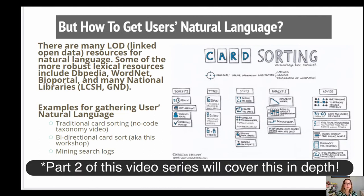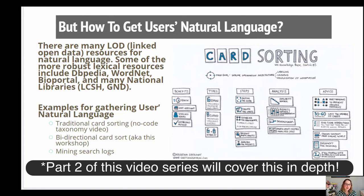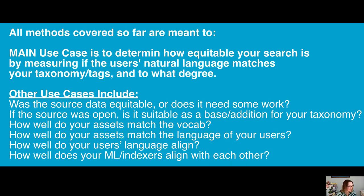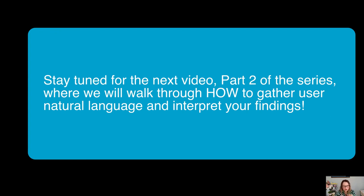Or you could do what we're going to practice today, and that is a bi-directional card sort. If you go and Google that, you won't find it anywhere because I built that method. I use this in my day job, and I use this internationally as well — to gather the natural language of people that do not speak English natively. Because if you do a direct translation, does anybody remember when the Olympics were in China and they did direct translations of street signs? They were hilarious, they were terrible. That's what happens when you do machine translations. But when you're dealing with human people doing search, you need to make sure that you have their natural language.